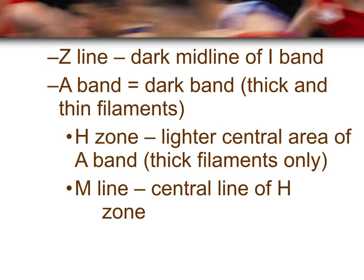The A-band gets its name because it's a bigger word — thicker and longer — while the I-band is called I-band because it's skinnier. Within the A-band is an area called the H-zone, where there are only thick filaments, and the M-line is the midline of the H-zone.